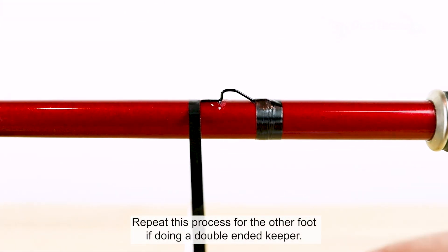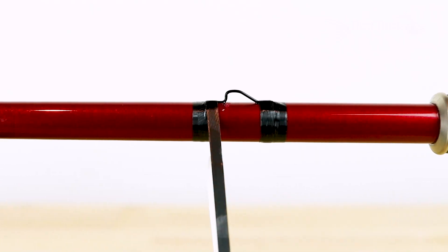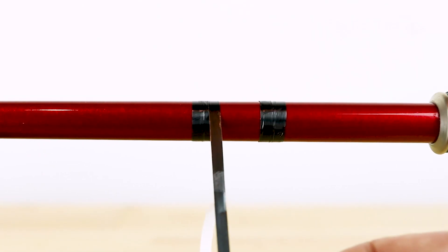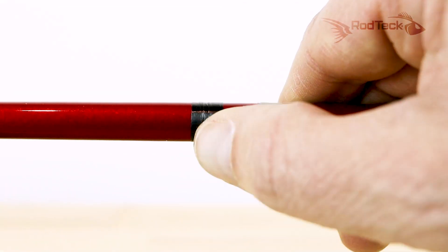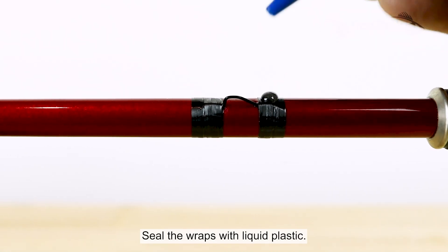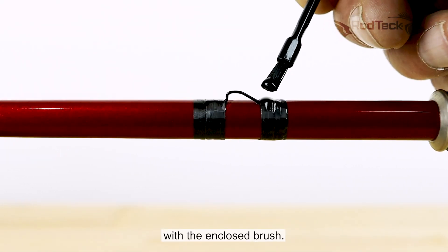Repeat this process for the other foot if doing a double ended keeper. Seal the wraps with liquid plastic. Begin by applying a small amount and smoothing it with the enclosed brush.